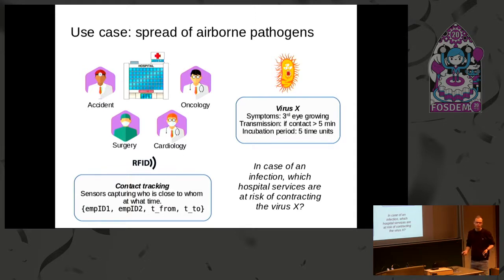Another fact is that we have a virus in our hospital called Virus X. The symptom is that a third eye is growing on the head, so you see when someone is infected. Another property is the transmission of that virus to another person is only given if the contact is over five minutes, a quite simple constraint in our case. The incubation period is five time units. If someone is infected and we detect them, then we have to look at the time period from five periods ago to see which contact this person had in the past, to see which services of this hospital we have to put in quarantine. So our question is: in case of an infection, which hospital services are at risk of contracting the virus?